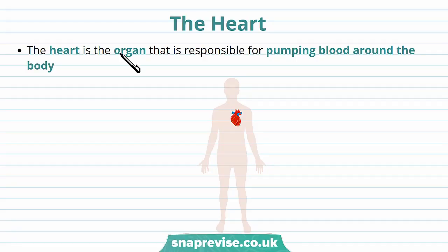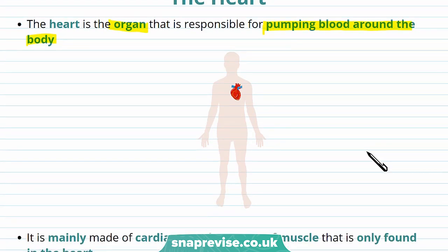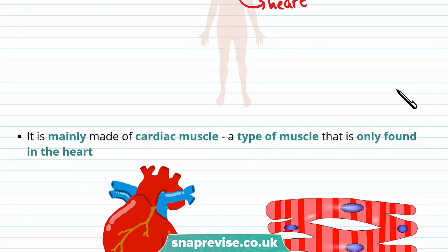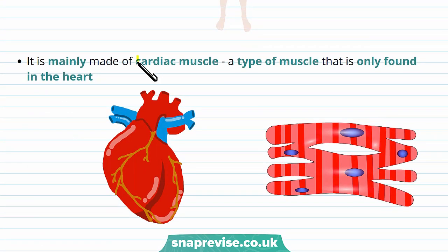The heart is an organ about the size of your fist. The role of the heart is to pump blood around the body. This enables oxygen and glucose to be supplied and waste to be removed. Your heart is on the left side of the body. The heart is mainly made of cardiac muscle, which is a type of muscle that is only found in the heart.